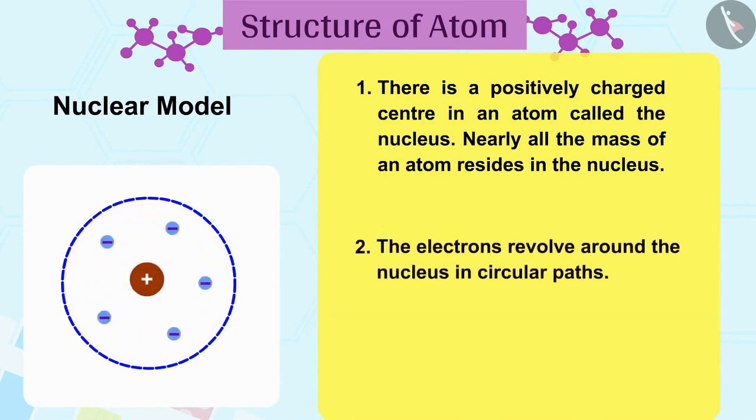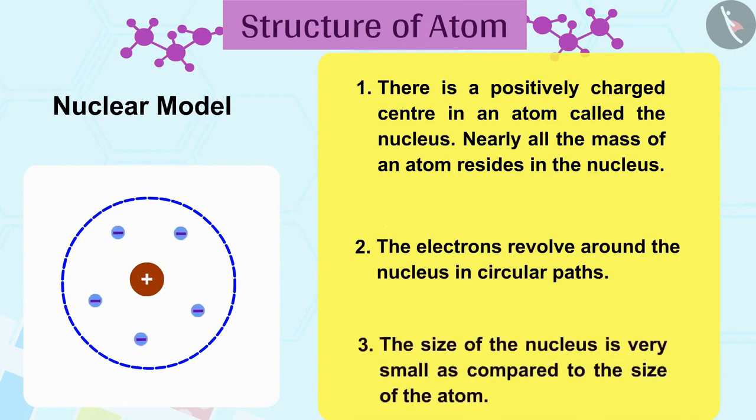2. The electrons revolve around the nucleus in circular paths. 3. The size of the nucleus is very small as compared to the size of the atom.